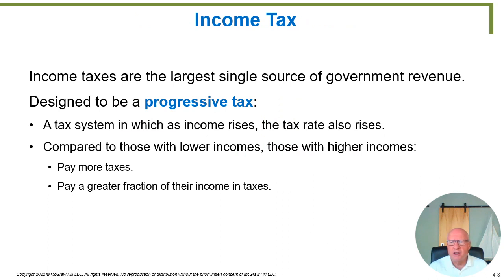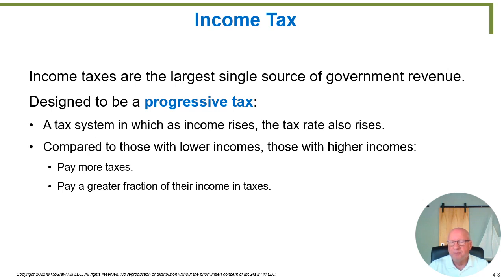The income tax is the largest tax collected by the federal government in total dollars. The federal income tax is a progressive tax, meaning as your income rises, the tax rate also rises. With a proportional tax, the tax rate remains the same as income rises. But with a progressive tax, the tax rate itself goes up, so taxes paid rise more rapidly than income. If income rises 10%, the government might collect 20% more. Those with higher incomes both pay more taxes and pay at a higher rate — a higher fraction of their income in taxes.